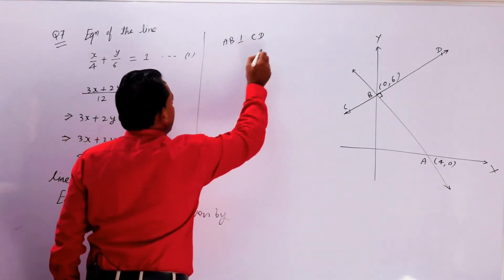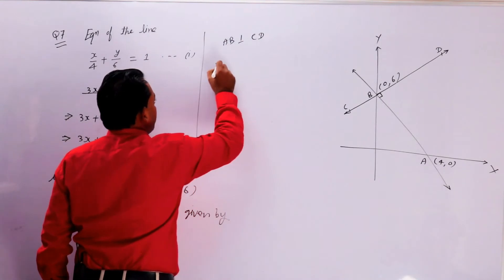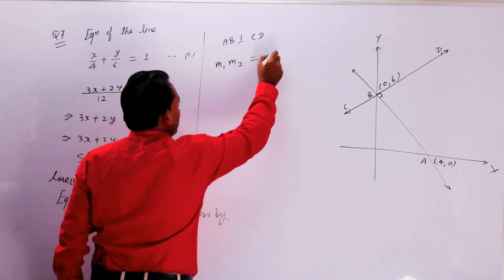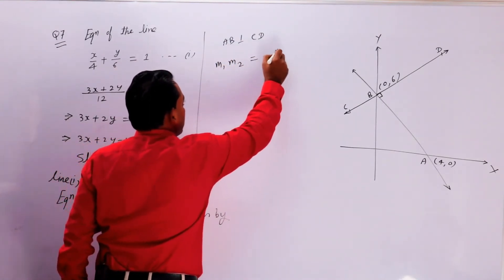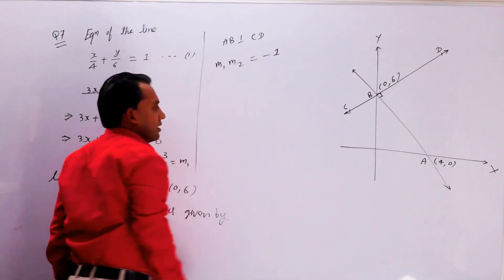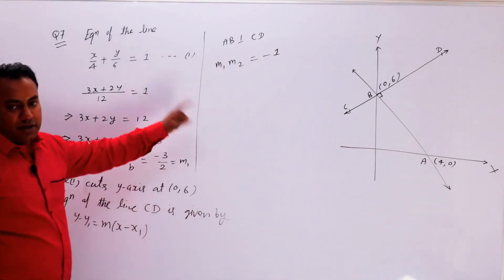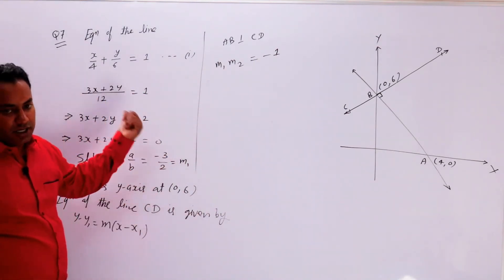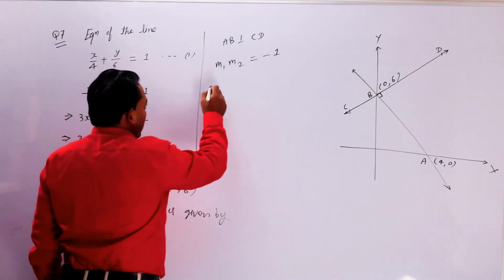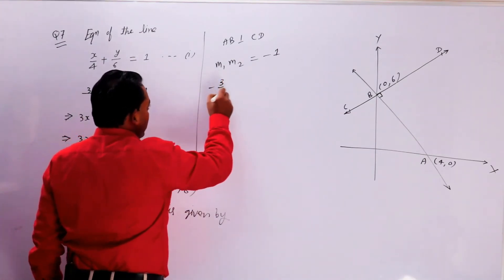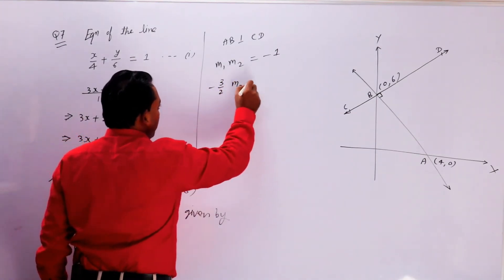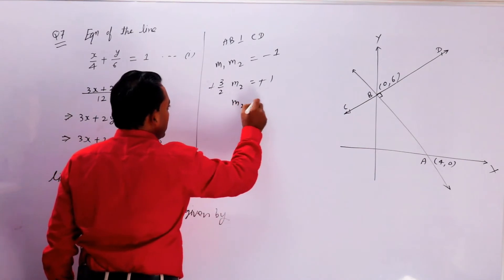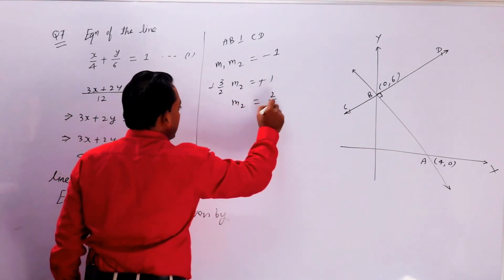AB perpendicular CD है बच्चों, तो उस case में m1 × m2 = -1। m2 को CD की slope मानें, जबकि m1 AB की slope है। तो यह हो जाएगा: (-3/2) × m2 = -1। Minus और minus cancel होंगे, तो m2 = 2/3।